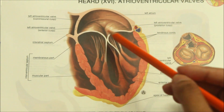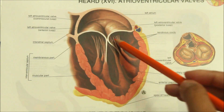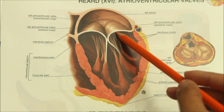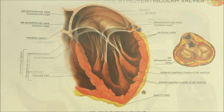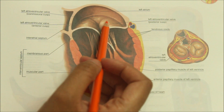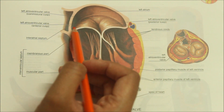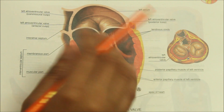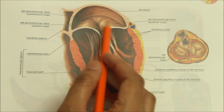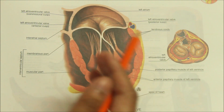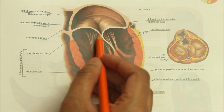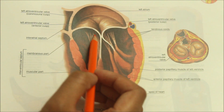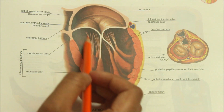Here you can see the chordae tendinae. The atrioventricular valves are kept competent by the papillary muscles. Each cusp of the atrioventricular valve has an attached and a free margin, and also an atrial surface and a ventricular surface. The atrial surface is smooth, whereas the ventricular surface is rough due to the attachment of chordae tendinae, as you can see here.